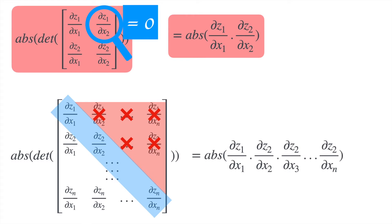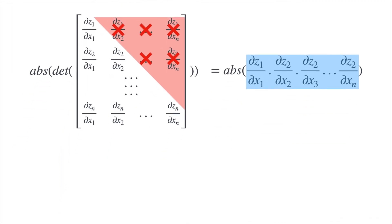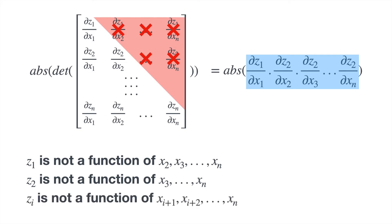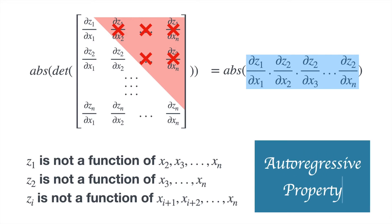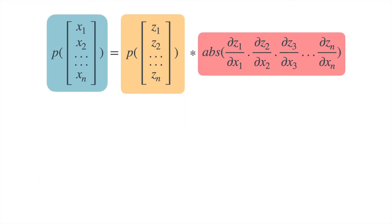If that's the case, then the value of this determinant would be equal to the product of its diagonal entries. What this means is that we want Z1 to be independent of X2, X3, and so on. We want Z2 to be independent of X3, X4, and so on. In general, we want the variable Zi to be independent of Xi+1, Xi+2, and so on.